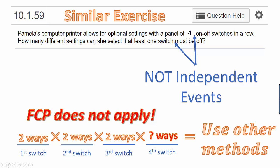When that happens, we have to use other methods. We can either use a tree diagram, as we did in the previous video. Or, if we want to avoid that, we need to be clever about breaking the problem down — either break it into smaller categories in which we do have independent events and add them together to get the total, or perhaps overcount and subtract off the outcomes that we don't want. But we'll leave that for another video.